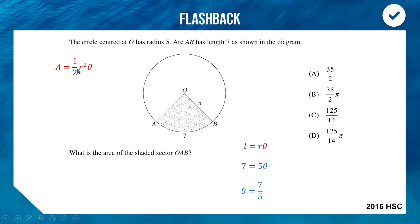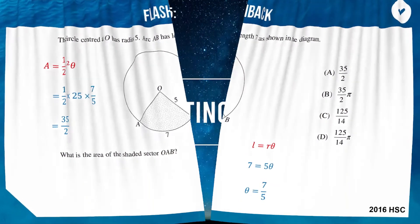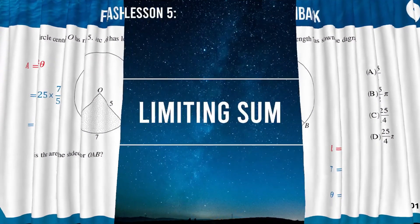Substituting into our area formula: A = ½ × 5² × 7/5, which gives an answer of 35/2. Well done if you chose option A.